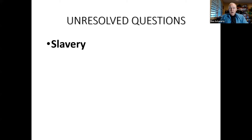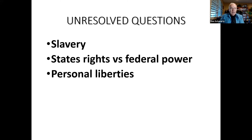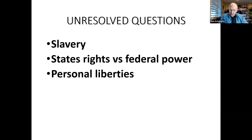The success of the Constitution can be seen in the fact that the United States is now the oldest enduring republic with the oldest enduring Constitution in world history, with political institutions and traditions that have stood the test of time. But the conflicts in the Constitution would be played out later — slavery would ultimately be resolved only through civil war, the conflict between states' rights and federal power would continue, and the Supreme Court would have to issue rulings about particular liberties in the Bill of Rights.